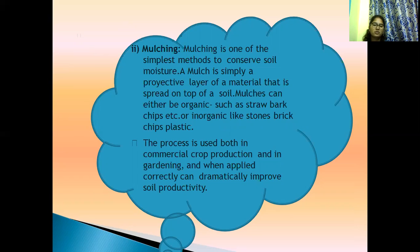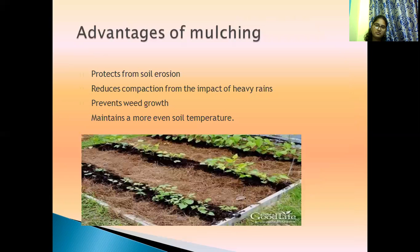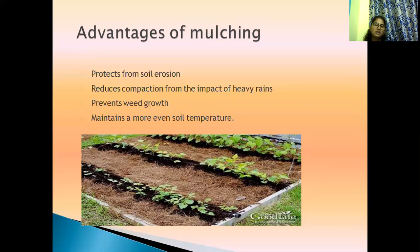Mulching is used in both commercial crop production and gardening. When applied correctly, it can dramatically improve soil productivity. We can use either organic or inorganic mulches. The advantages of organic mulching include enhancement of soil with nutrients essential for growing plants, protection from soil erosion, reduction of compaction from the impact of heavy rains, and maintaining more even soil temperatures.